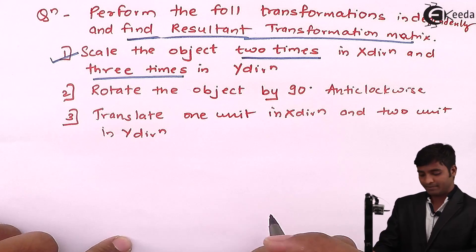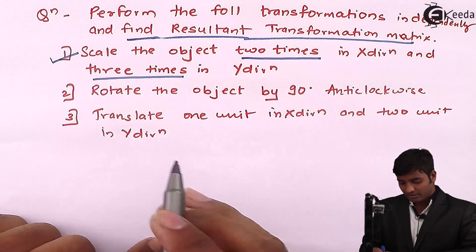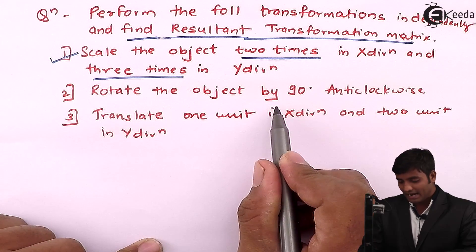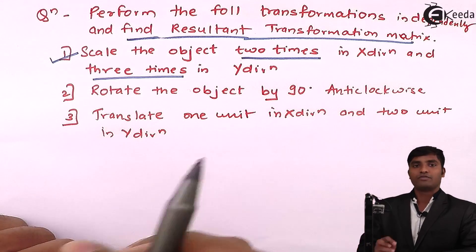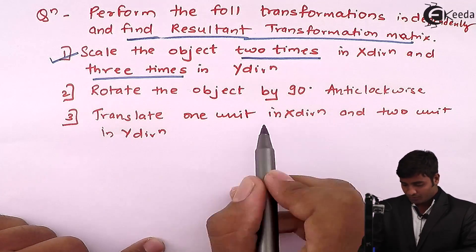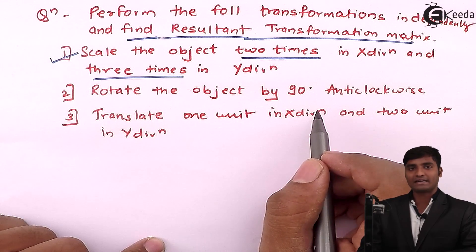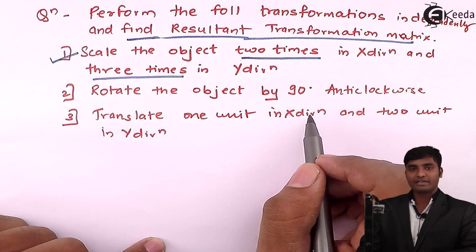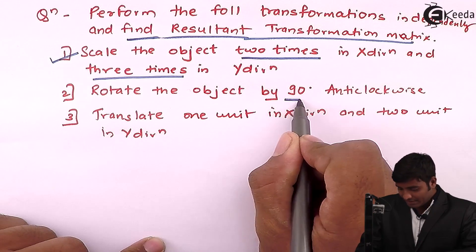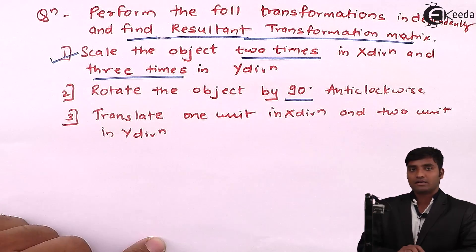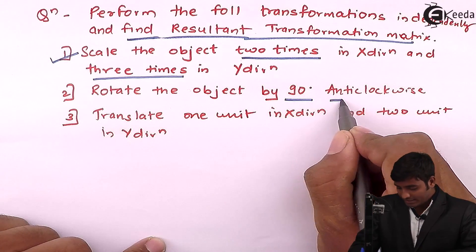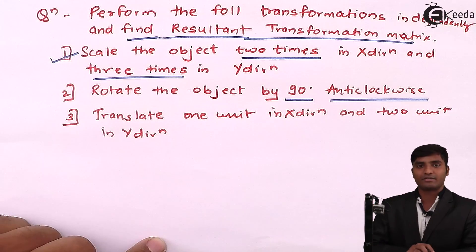The second transformation is to rotate the object 90 degrees anti-clockwise. For the rotation matrix we require the value of theta, which is given as 90 degrees. Since the sign convention for anti-clockwise rotation is positive, theta is plus 90 degrees.